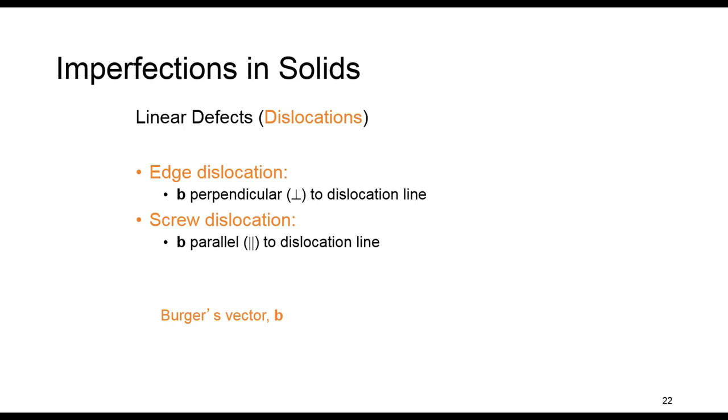Edge dislocations, so dislocations are generally in two types, edge and screw. Edge dislocation is when an extra half plane of atoms is inserted in a crystal structure. Here, Burger's vector, which is a measure of lattice distortion and shown by B, is perpendicular to the dislocation line. We will talk about it in the next slide.